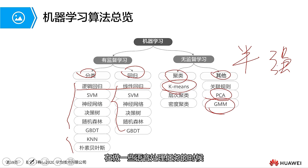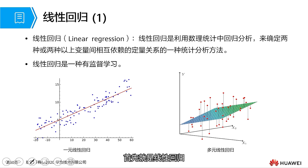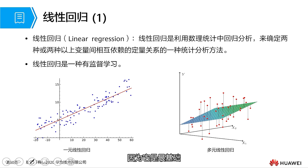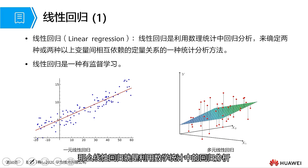There are also hierarchical clustering, density clustering, and even spectral clustering. Other algorithms, such as PCA, which is an algorithm for dimensionality reduction, and the Gaussian mixture model — when performing some speech processing tasks, this kind of model is commonly used. So next we will focus on the relatively simple algorithms. First, let's talk about linear regression.